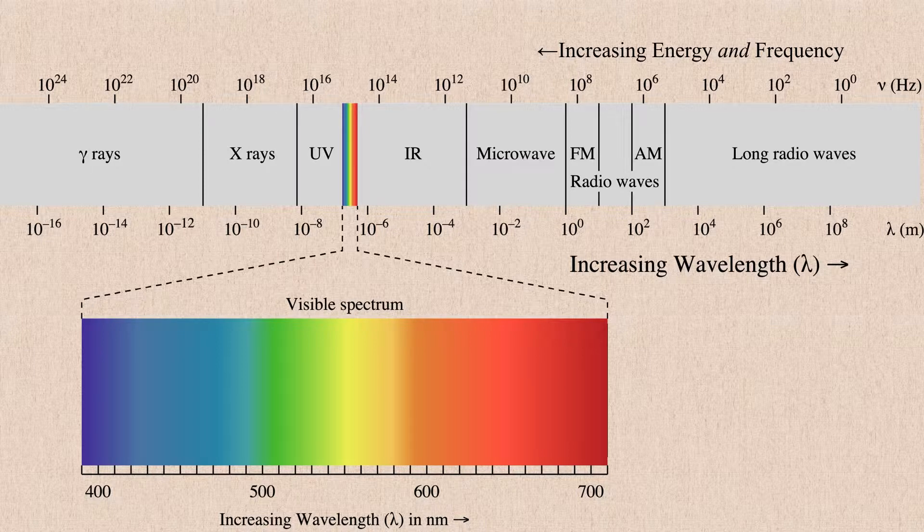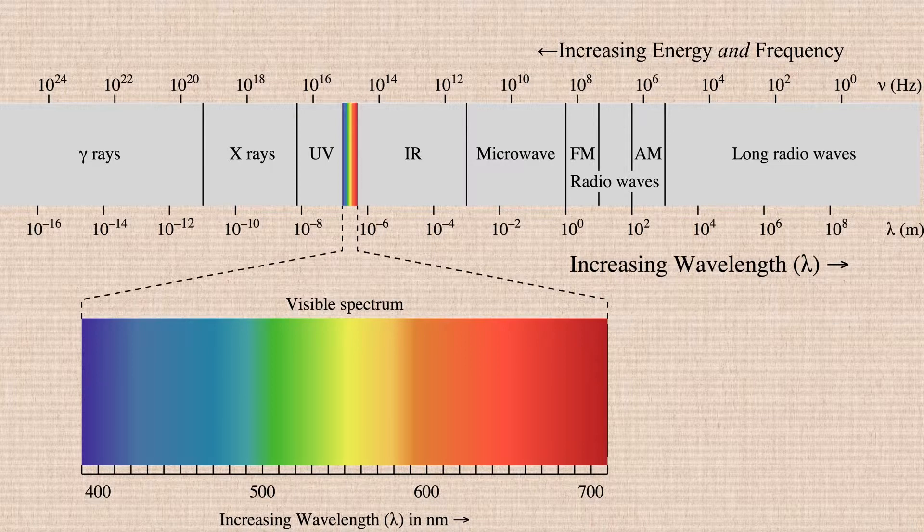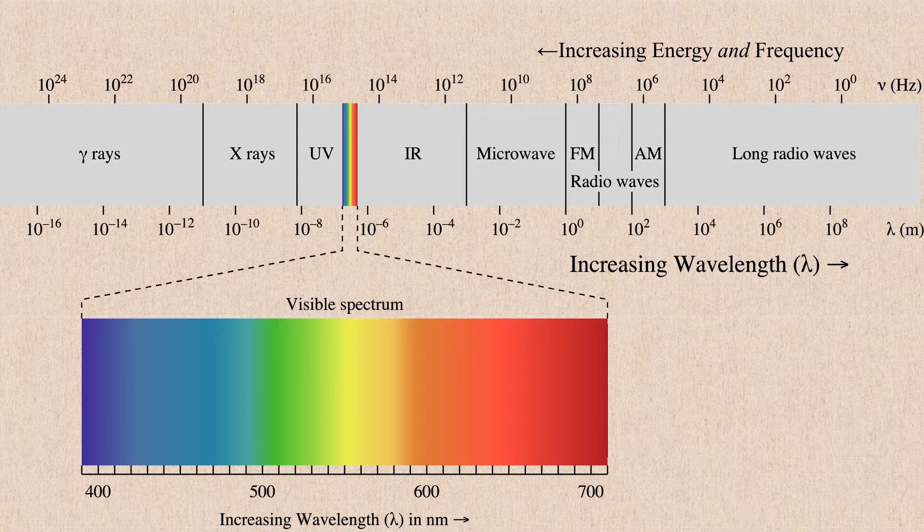And this is why gamma rays are so deadly. And this is why too many x-rays can be very dangerous as well as too much ultraviolet. All of these waves are very high energy waves and having a lot of those high energy waves pass through your body can be hazardous to your health. Or they could at least turn you into the Hulk if you're really lucky.